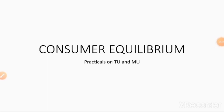Today we are going to practice how to calculate total utility and marginal utility from the topic of consumer equilibrium in microeconomics. We already learned what total utility is — it refers to the total satisfaction obtained from the consumption of all the units of a commodity.